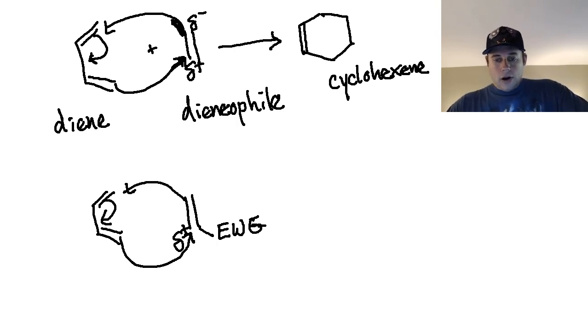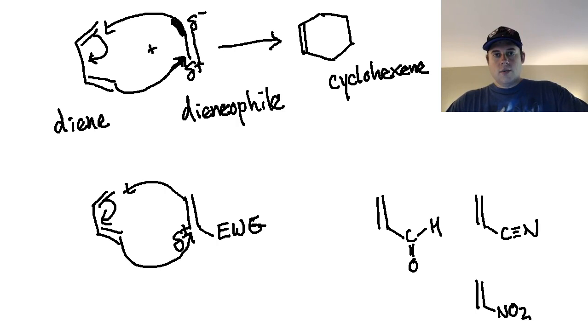A better example of a dienophile would be, for instance, if I put a carbonyl here. Maybe I have an aldehyde. Maybe I have a cyano group, a nitrile group. Maybe I have a nitro group. An electron withdrawing group is ideal. Now that being said, an electron donating group would be non-ideal. You want to avoid that. That's going to make the reaction go even slower than just the regular dienophile would.